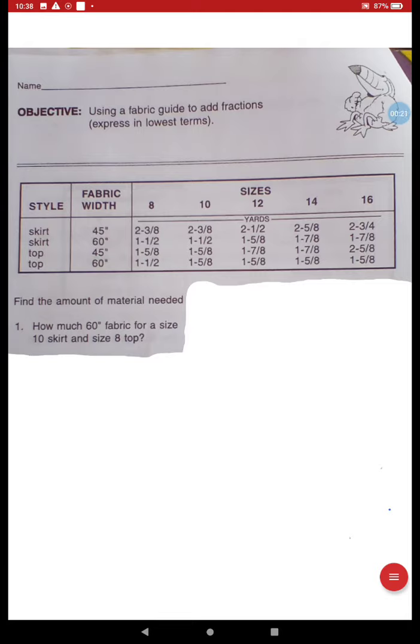Let's look at this t-chart together. Here we have the style whether you're making a skirt or a top. Here we have the fabric width either 45 inches or 60 inches. And here we have the sizes 8, 10, 12, 14, and 16 and how many yards of fabric we're going to need for that size.